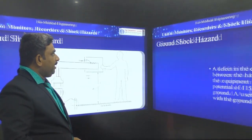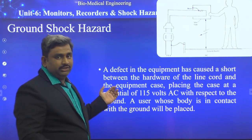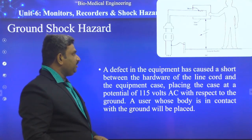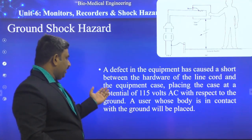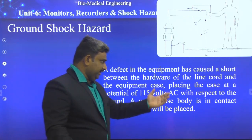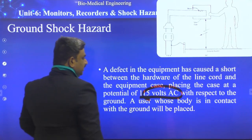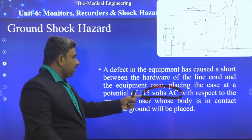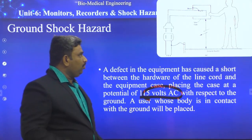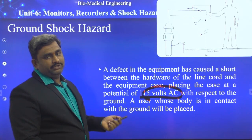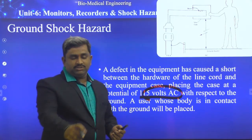A defect in the equipment has caused a short between the hardware of the line cord and the equipment case, placing the case at a potential of 115 volts AC with respect to ground. A user whose body is in contact with the ground will be placed in this circuit. Whichever patient is connected to the ground, that patient's body will get electrical shock from this situation.